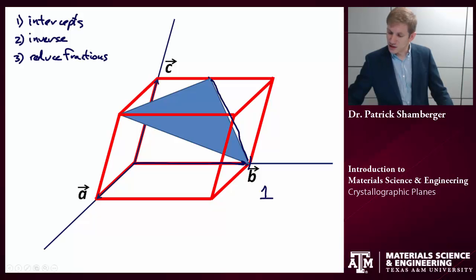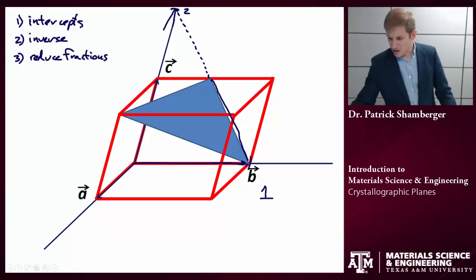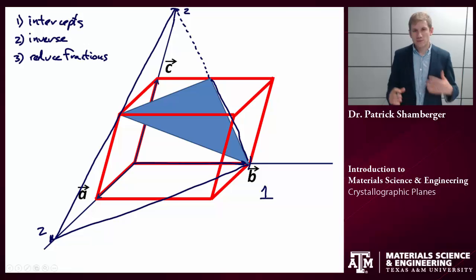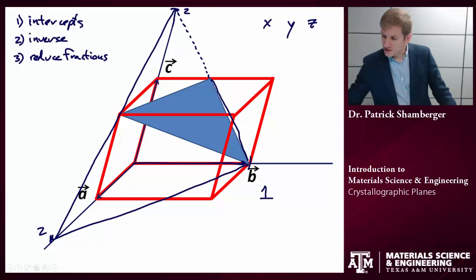I see that this line here, if I kept extending it, would intersect the C axis up at two. Similarly, I need to draw an extended line here, or I could come from this side, passing through one half. And I see that it intersects the A axis also out here at two. Now this might be a little bit hard to visualize, so take a moment and try and work it out for yourself.